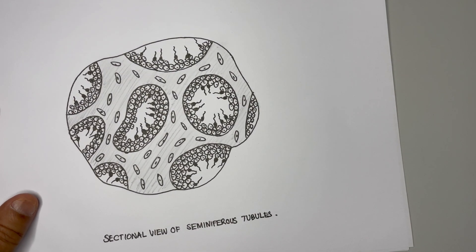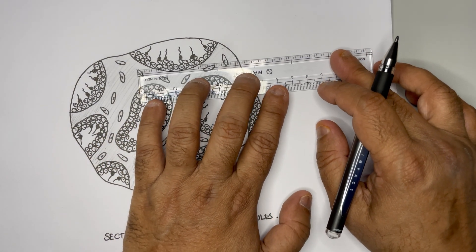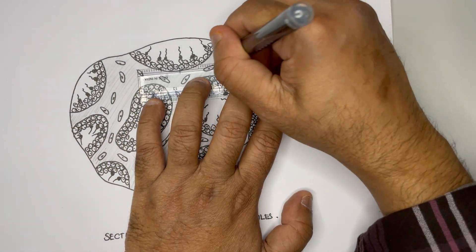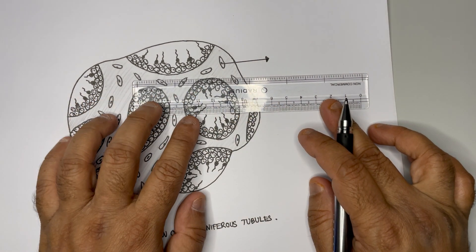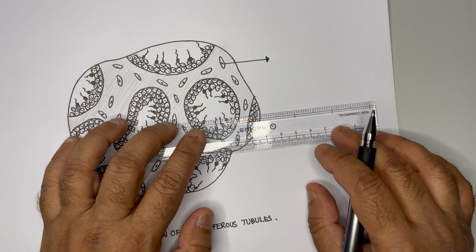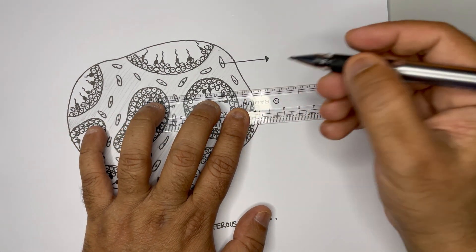What are the major parts that we are going to label here? So first of all, these cells are actually interstitial cells. And then we have this tubule, this is the outer cover of the seminiferous tubule.